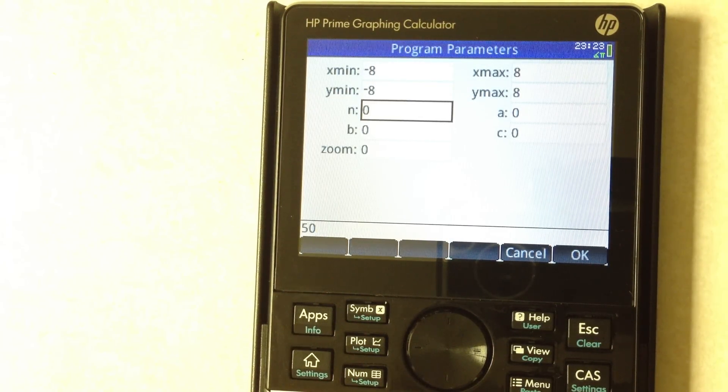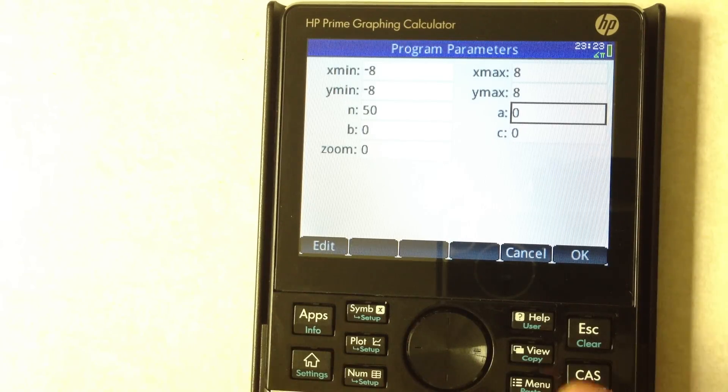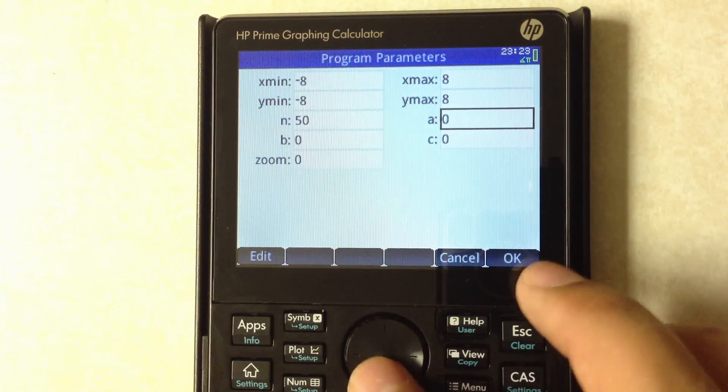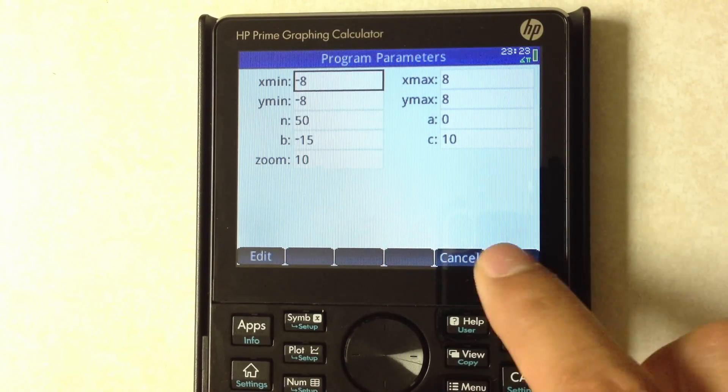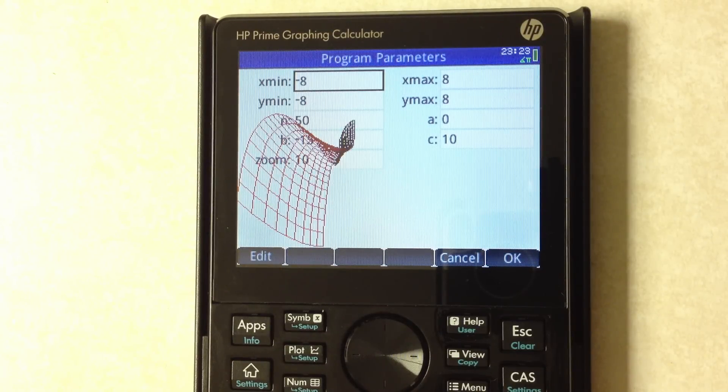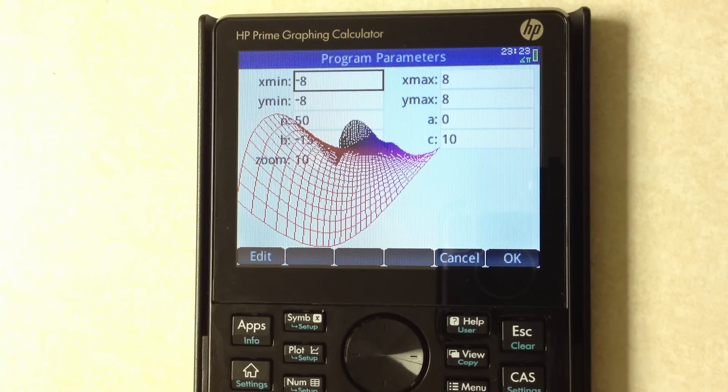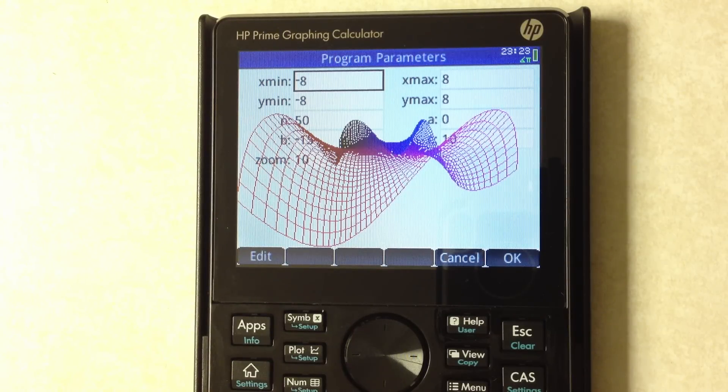If we were to repeat that but with a 50 by 50 wireframe grid, again this is just built using the basic programming language to do this. So the speed is pretty nice. Okay so here we go.